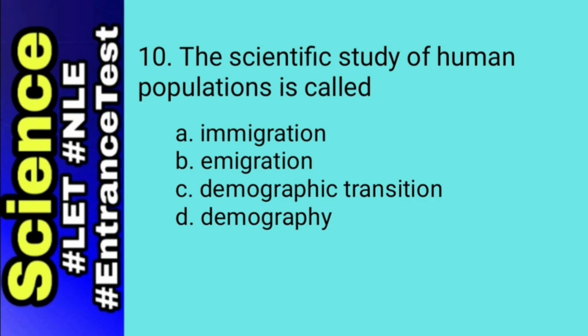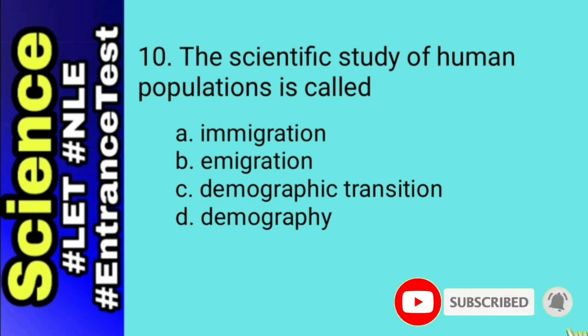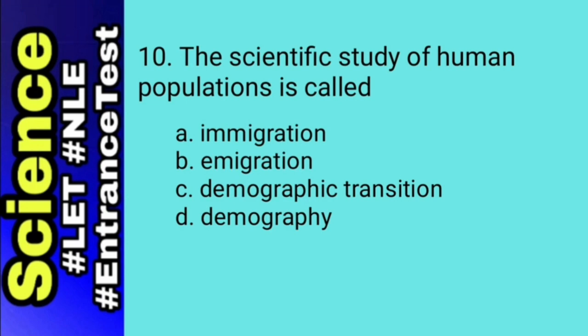For number 10, we will eliminate A and B — immigration and emigration. We are now left with choices C and D. Demographic transition pertains to a dramatic change from high birth rates and death rates to low birth rates and death rates. Whereas demography pertains to the study of human population. Thus, the answer for this number is letter D, demography.